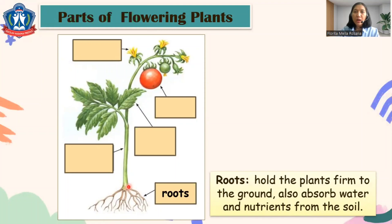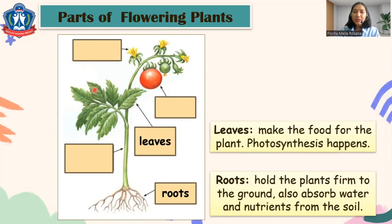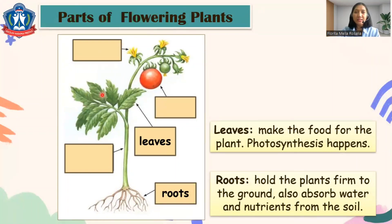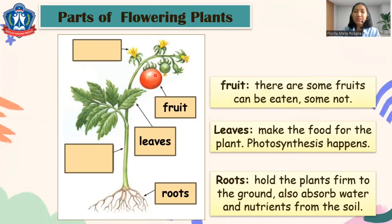Second, we have the green things — that's the leaves. The leaves make the food for the plant, so photosynthesis can happen on the leaves. With the help from the sunlight, the plants can make their own food. We also have the fruit — some fruits can be eaten but some not.